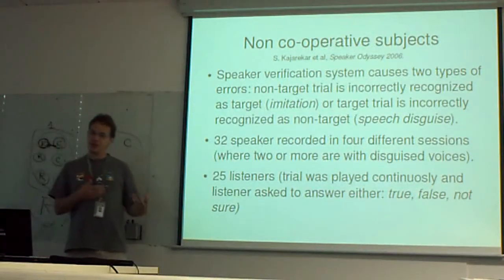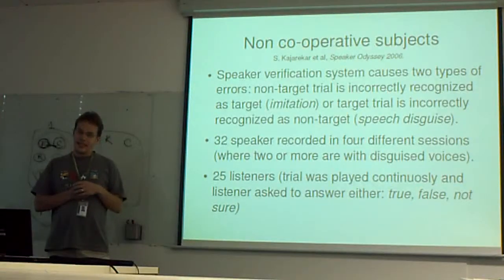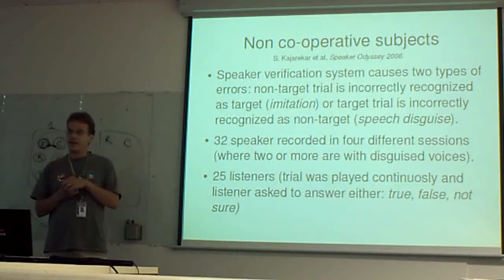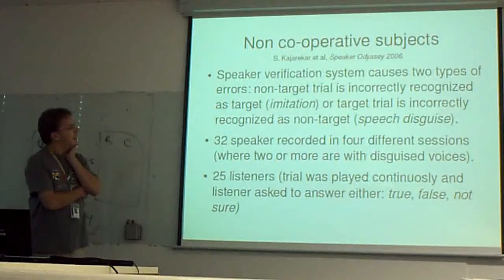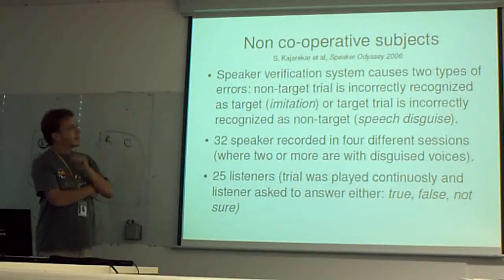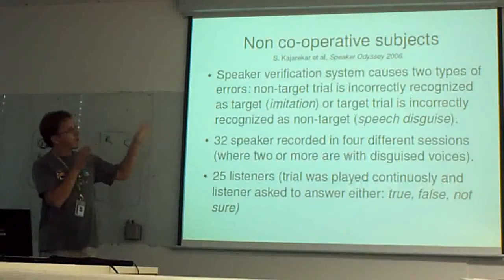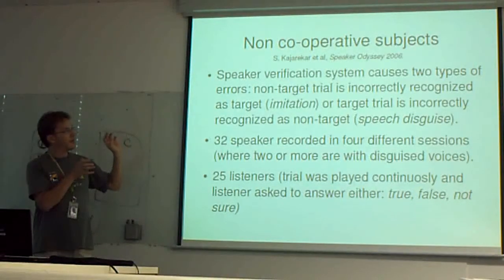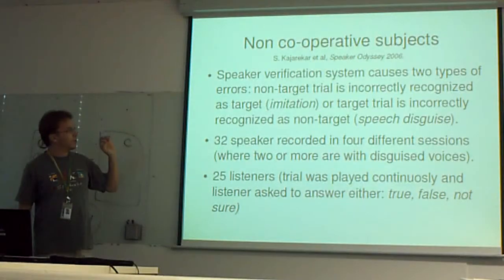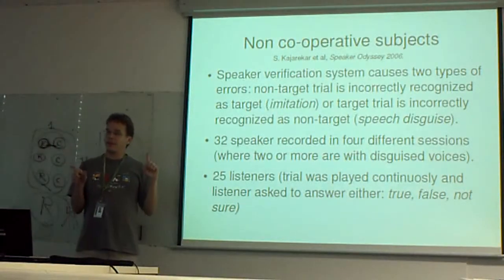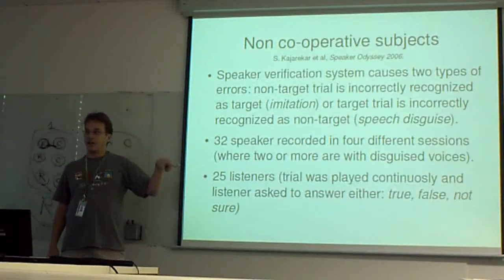Moving to a literature review, non-cooperative subjects were studied at SRI in the US, reported at the 2016 Speaker and Language Recognition workshop. They wanted to study the non-cooperative case, where you have two kinds of errors you can induce in a system. You can try to imitate — if you are part of a non-target trial, you can try to imitate a target.